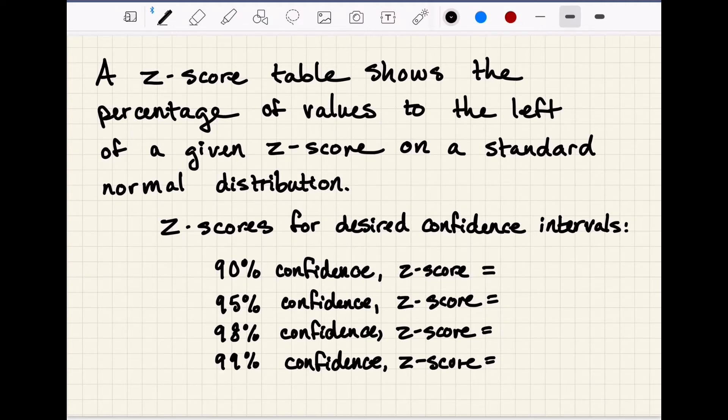So there are full z-tables that you can use, but often most people will just be interested in a specific confidence level. Here are some commonly used ones. For a 90% confidence interval, the z-score is 1.645. For 95%, it is 1.960. For 98%, it is 2.326. And for 99%, it is 2.576.